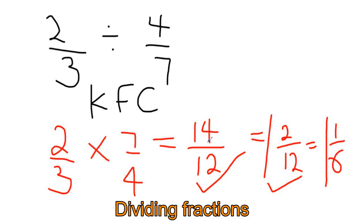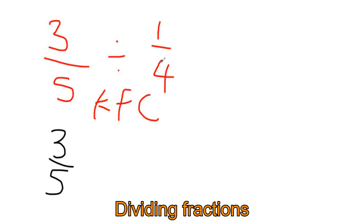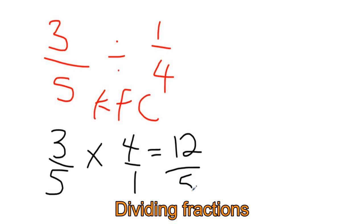We're going to do another example of dividing fractions: five-thirds divided by one over four. Remember KFC — we keep the first fraction, we flip the second fraction, and we change the divide to a times sign. Now we multiply the top and multiply the bottom.